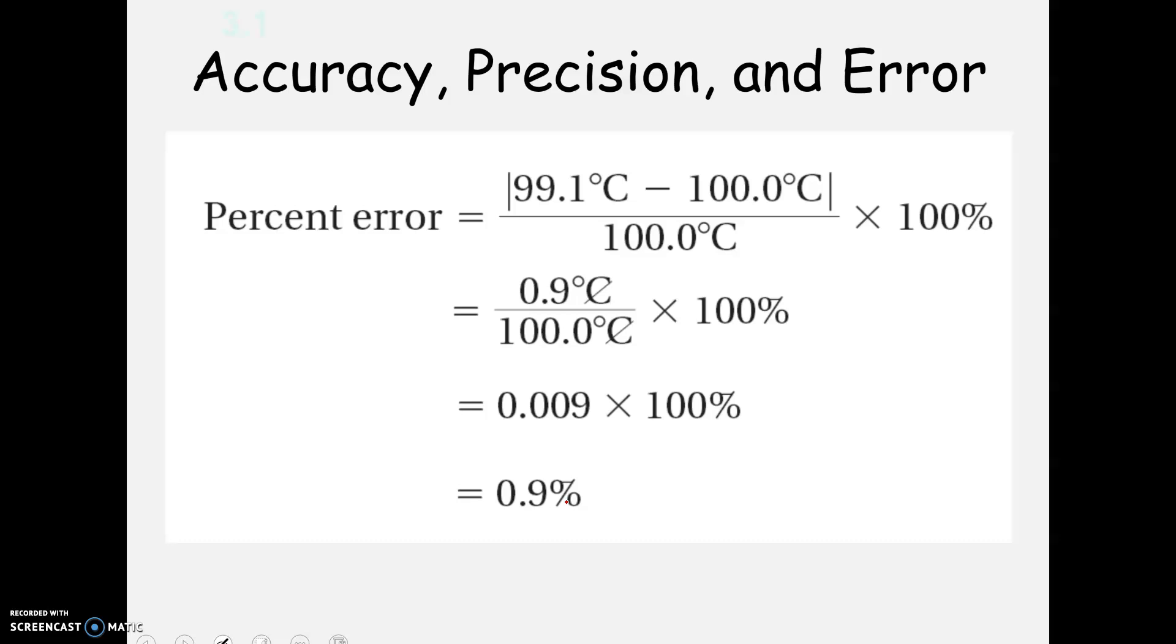And so this is what our work would look like. So it's going to be the absolute value of what you got minus the published over 100, in this case because it's 100 degrees Celsius. And then times 100%, always times 100%.